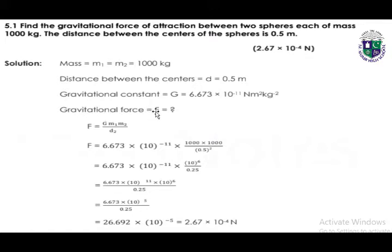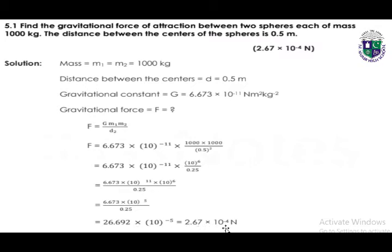We have to find the gravitational force. The formula for gravitational force, as we learned in Unit 5, is F = G·m1·m2 / d². By putting the values of G, m1, m2, and d and calculating, we get the gravitational force: 2.67 × 10⁻⁴ newtons.